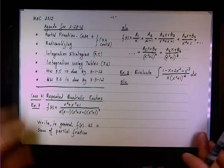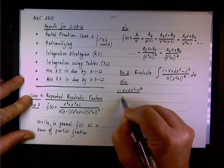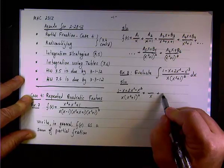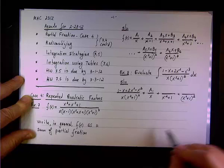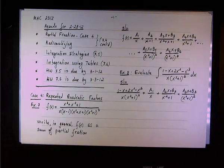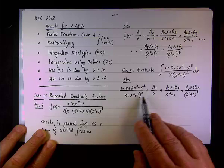We decompose the rational function as a sum of partial fractions. We have (1 − x + 2x² − x³) over x(x² + 1)². We have one linear factor and a quadratic repeated twice. The decomposition gives: a1/x + (a2x + b2)/(x² + 1) + (a3x + b3)/(x² + 1)². The task is to find the five unknown coefficients a1, a2, b2, a3, b3.